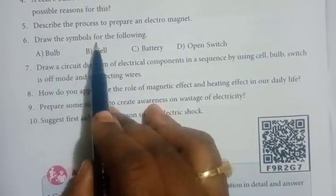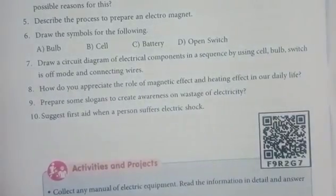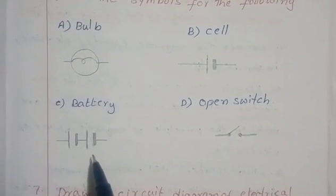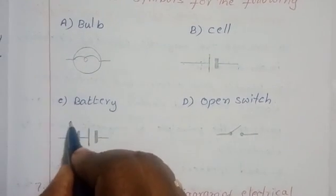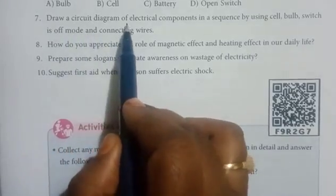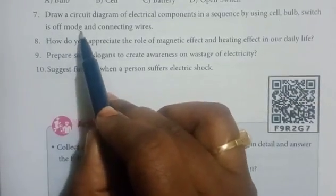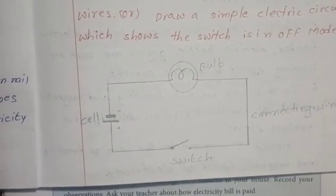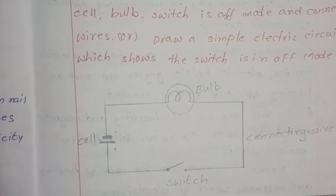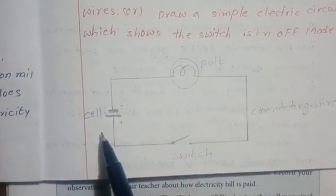Sixth question: Draw the symbols for bulb, cell, battery, and open switch. Seventh question: Draw a circuit diagram using a cell, bulb, switch in off mode, and connecting wires. Here is a simple electric circuit showing the switch in off mode, with the bulb, connecting wire, switch, and cell.